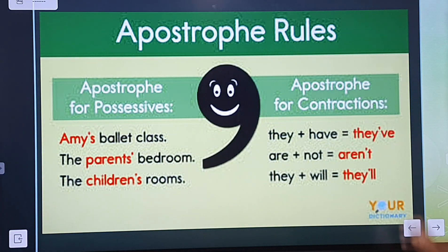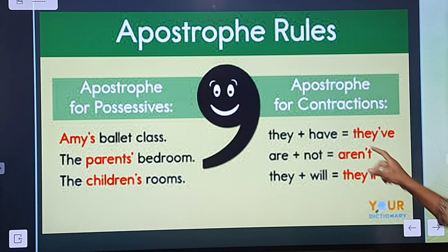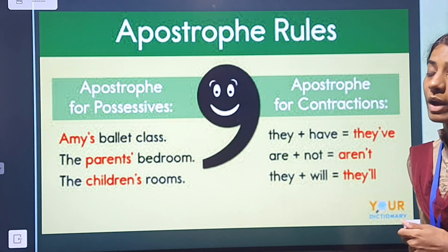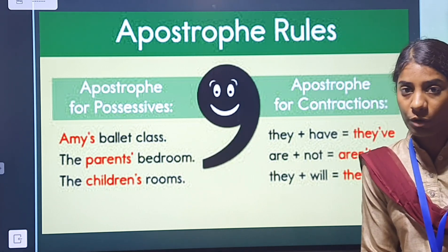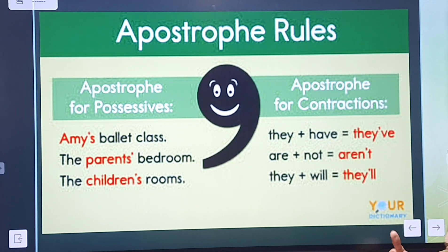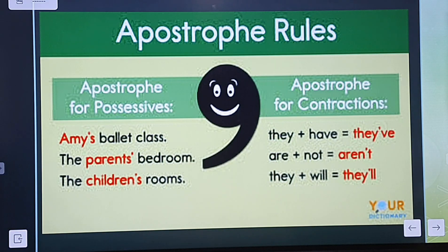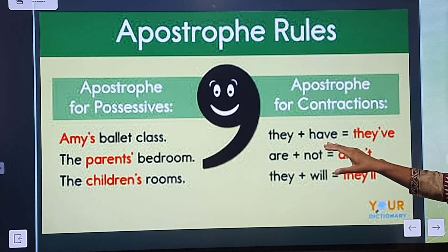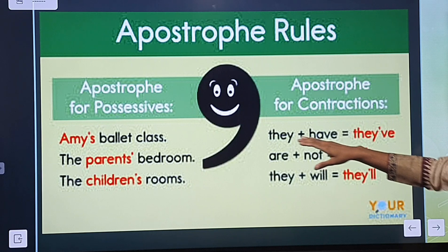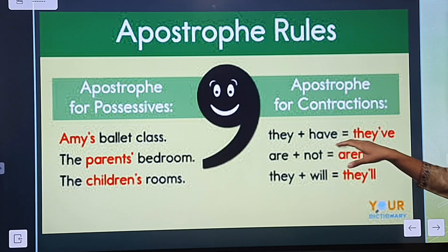Apostrophe is also used for contractions. We have already learned about contractions — when we were learning the question tags, I explained how contractions are made. When a third person pronoun combines with an auxiliary verb, we use an apostrophe to form the contraction.